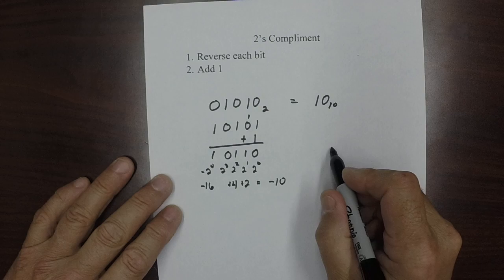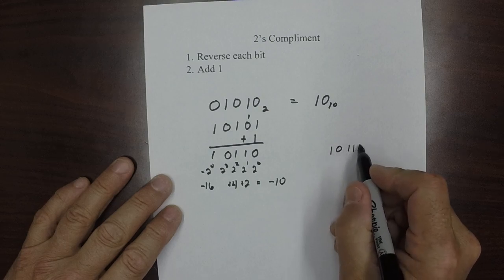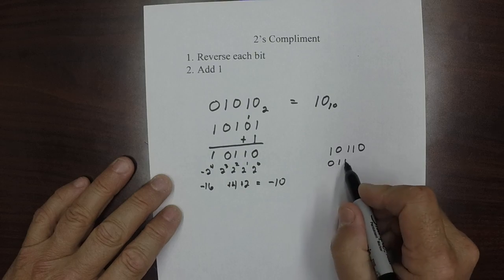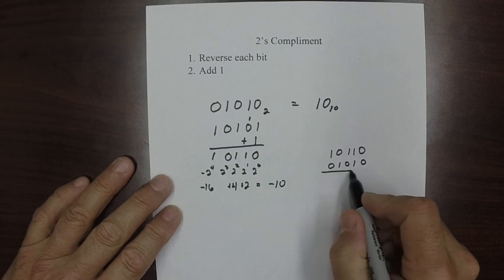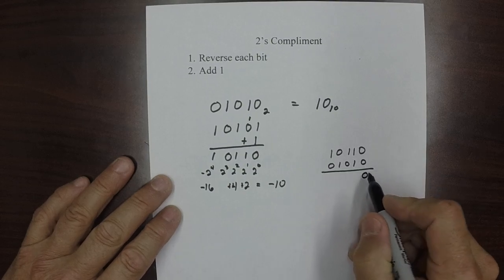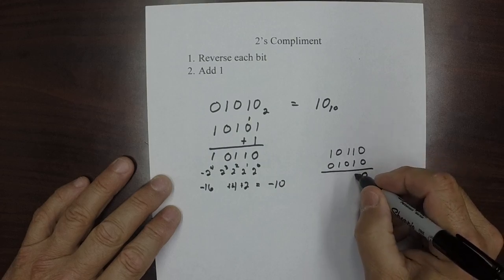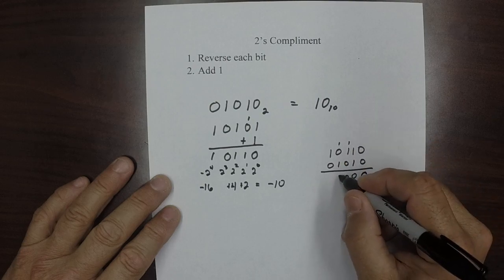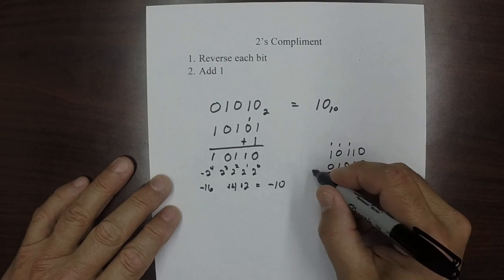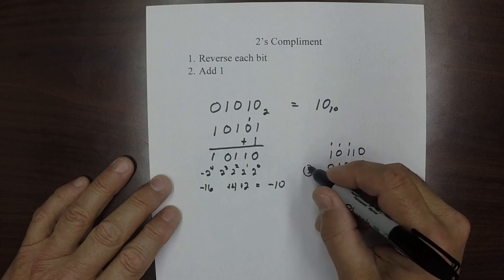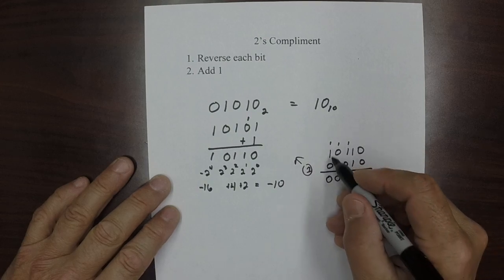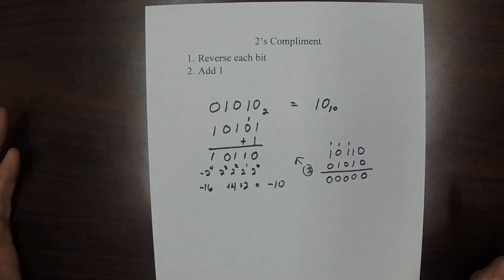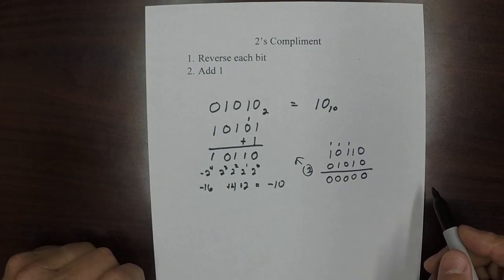Another way to check it is to take the number 1, 0, 1, 1, 0, and add it to a positive 10, which is 0, 1, 0, 1, 0. Add that: 0, 0, carry the 1, and this is 0, carry the 1, and this is 0, carry the 1, 0, and then the leftmost bit gets thrown away since both sides are different. So we add 10 to a negative 10, and we expect it to come out as 0.